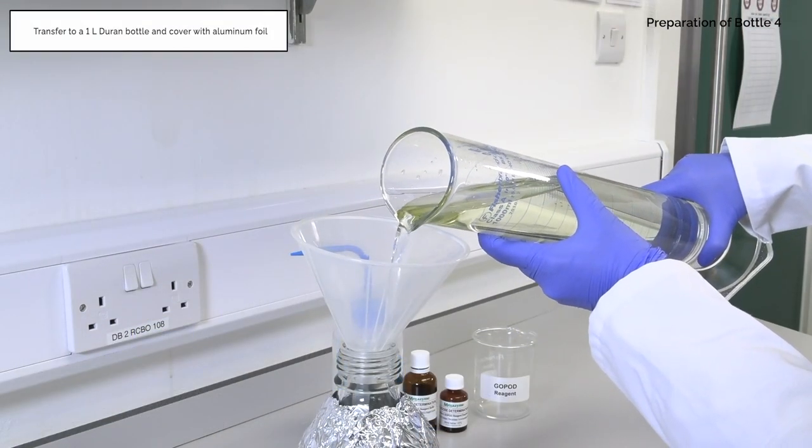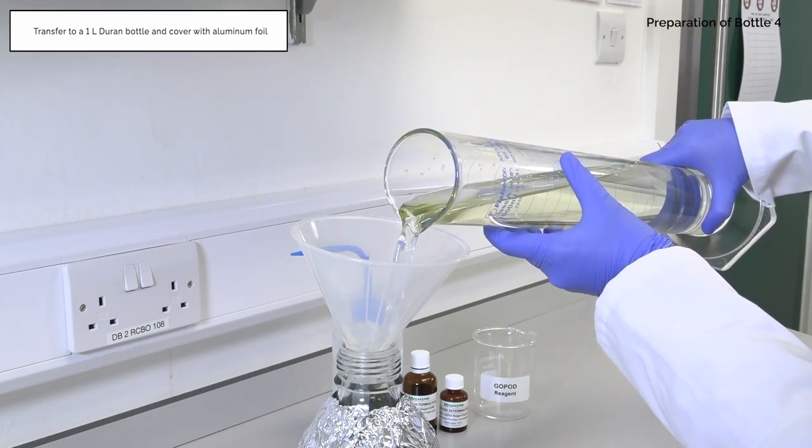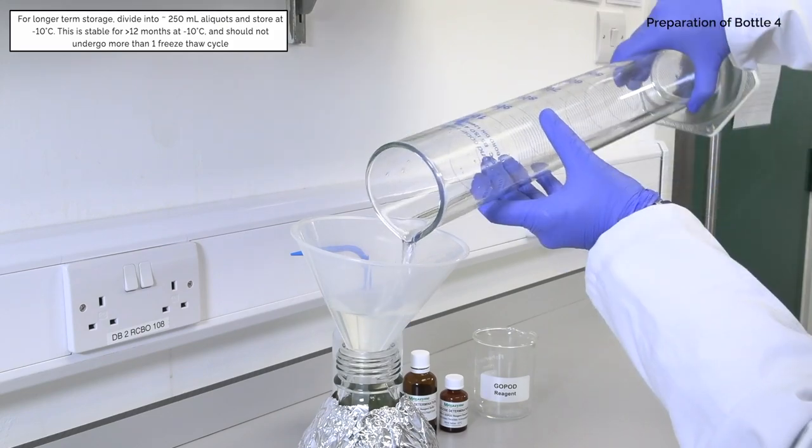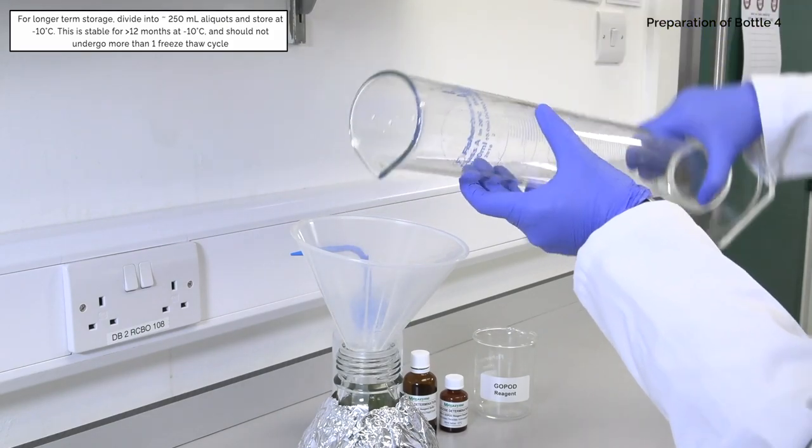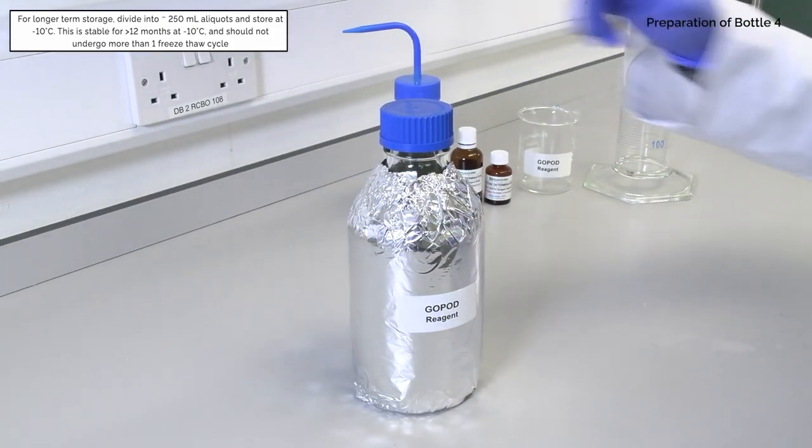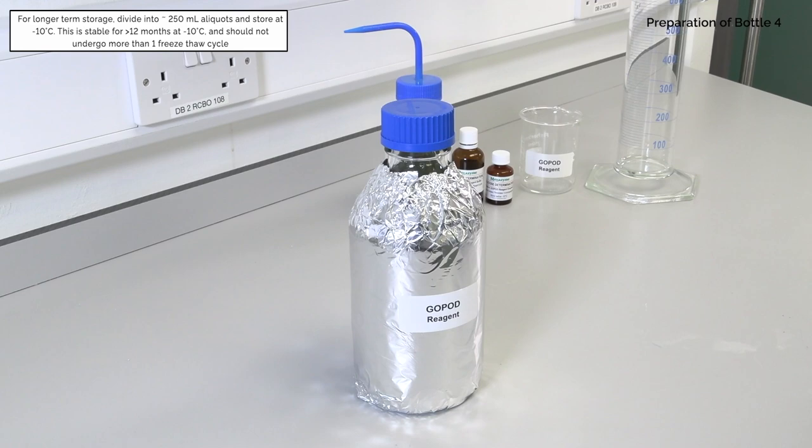Transfer to a 1 liter Duran bottle and cover with aluminum foil. For longer term storage divide into approximately 250 milliliter aliquots and store at minus 10 degrees Celsius. This is stable for greater than 12 months at minus 10 degrees Celsius and should not undergo more than one freeze-thaw cycle.